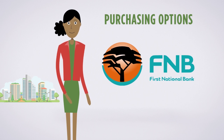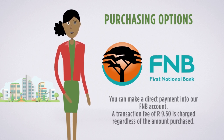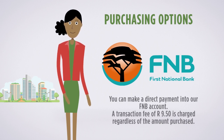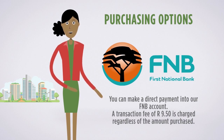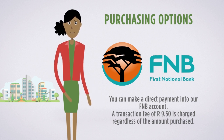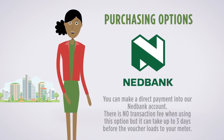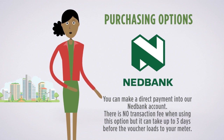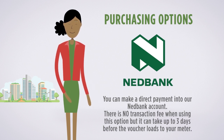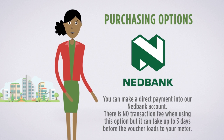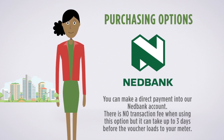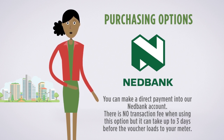FNB: you can make a direct payment into our FNB account. A transaction fee of R9.50 is charged regardless of the amount purchased. NetBank: you can make a direct payment into our NetBank account. There is no transaction fee when using this option, but it can take up to three days before the voucher loads to your meter.